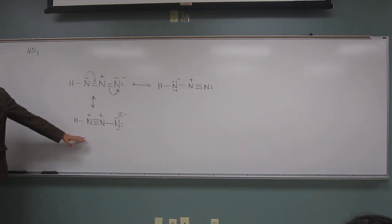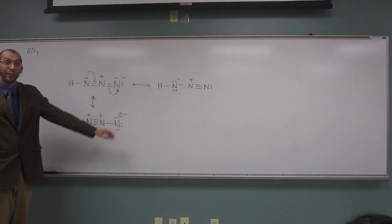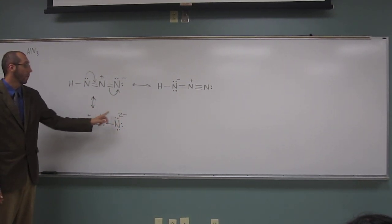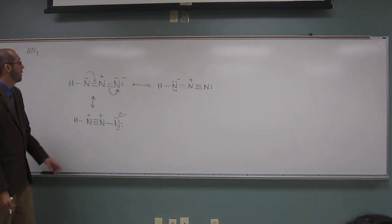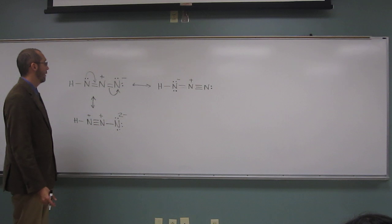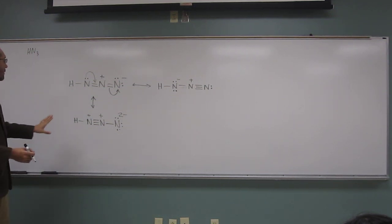So that's the other resonance structure. Notice, this one has a negative two, bad already, and it's got a bunch of charges, right? So we got one, two, plus two more, so like four charges, as opposed to these ones only have two. So if you wanted to say, what is the least resonance contributor, you would say this one would be the least.